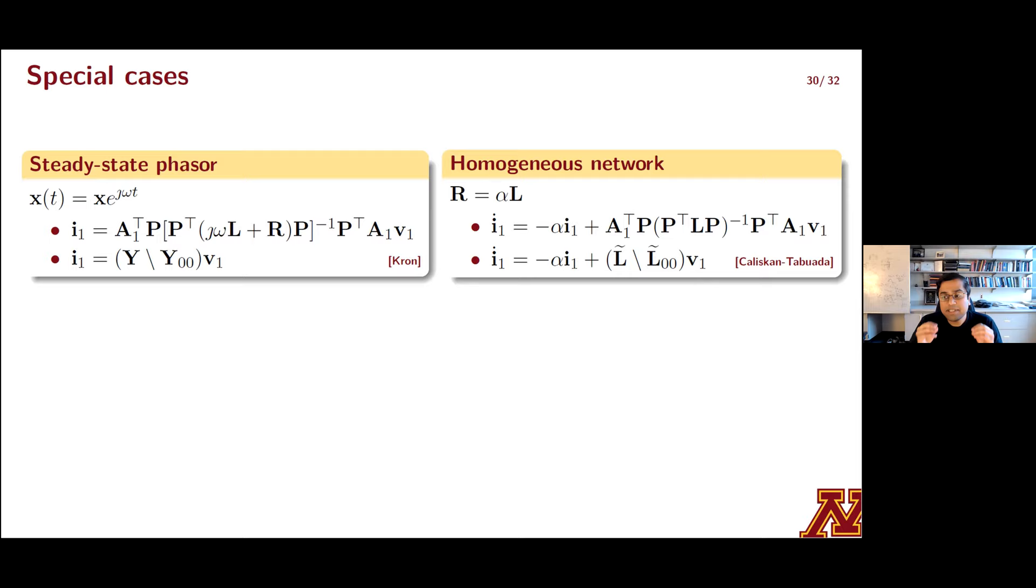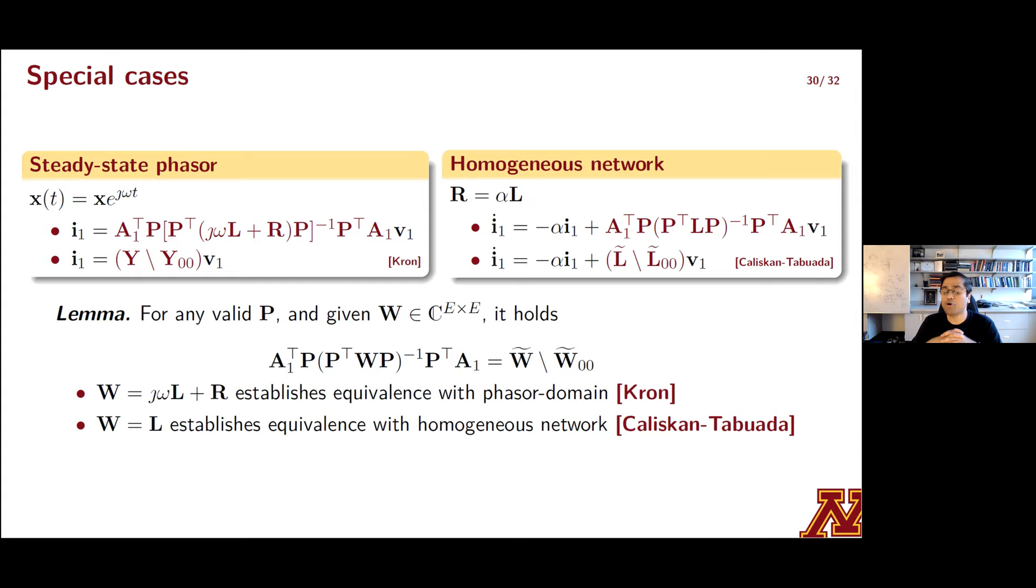Similarly, if you substitute R is equal to alpha L in the dynamics that we had, and also allow these quantities I and V to be time domain signals, you'll get this ODE in I1 and V1. And that's reported in the first bullet in the box on the right. At first glance, it's quite unclear how we can align these algebraic expressions and these differential equations that we get from our approach with the cases that we know already, which are due to Krone and due to Kaliskan and Tabuada. To restore harmony, what we really need is these maroon P-dependent quantities to be equal to these unique Laplacians that we obtained from Schur complements in the classical approaches. And surprisingly, this actually does hold.